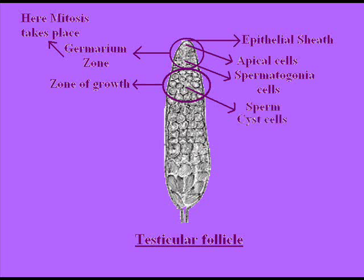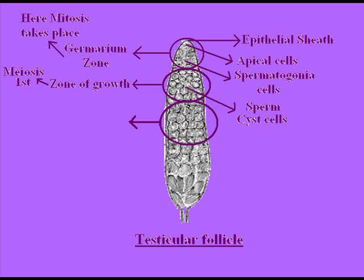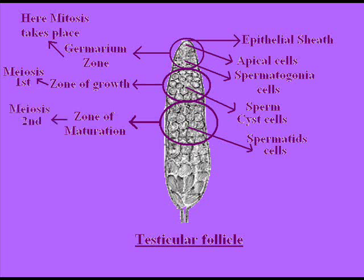In the zone of growth, sperm cyst cells are present and meiosis first takes place. The third zone is the zone of maturation, in which spermatid cells are present and meiosis second occurs.